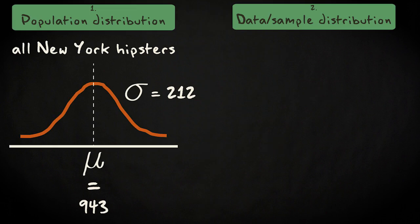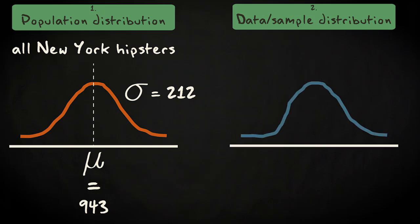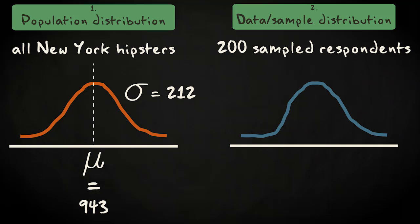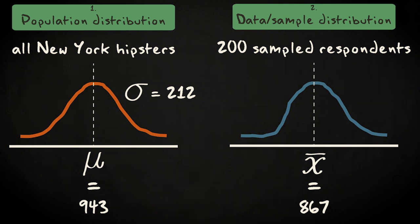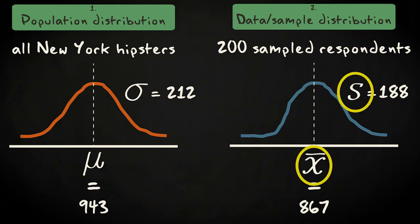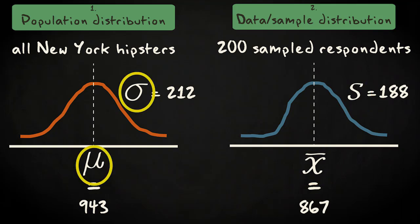The second distribution is the data or sample distribution — it is the distribution of the sample data. Just like the population distribution, it is approximately bell-shaped. The cases here are the 200 sampled respondents. The mean of this distribution, symbolized by x-bar, equals 867 minutes, which is not very far removed from the population mean of 943 minutes. The standard deviation in the sample is 188 minutes. The mean and standard deviation are symbolized by Roman characters because they are sample statistics, while population parameters use Greek symbols.